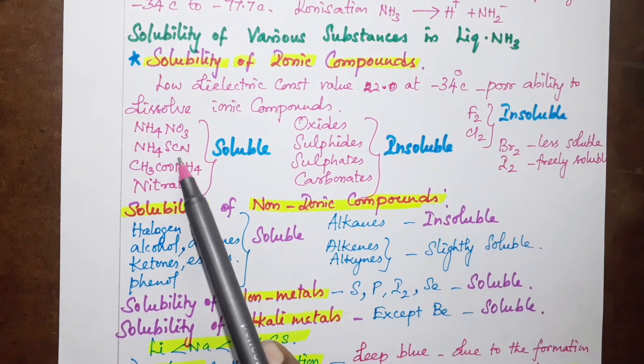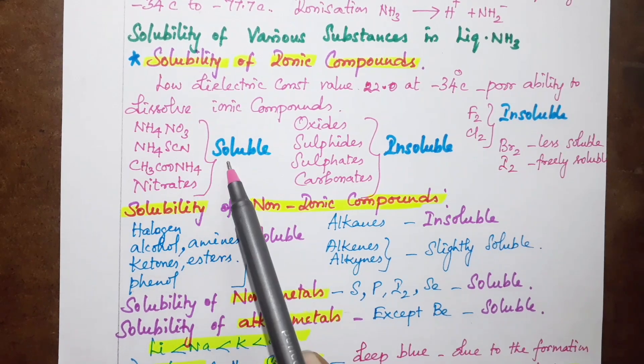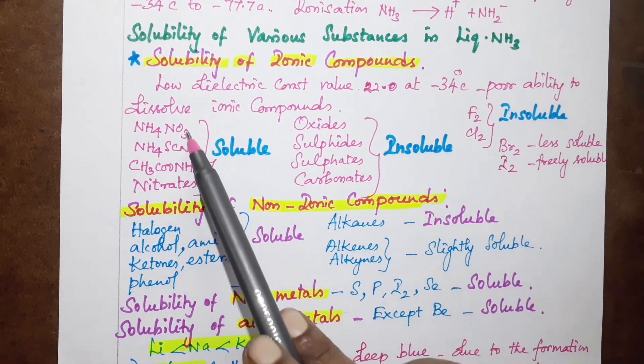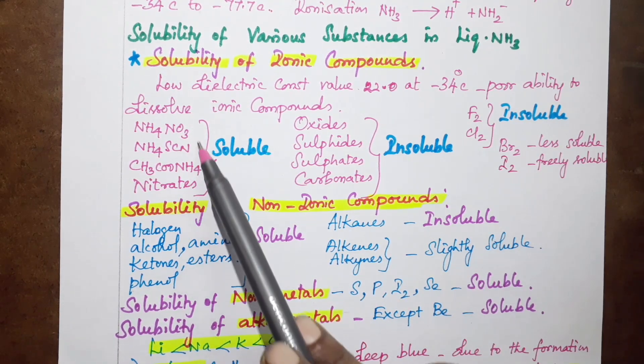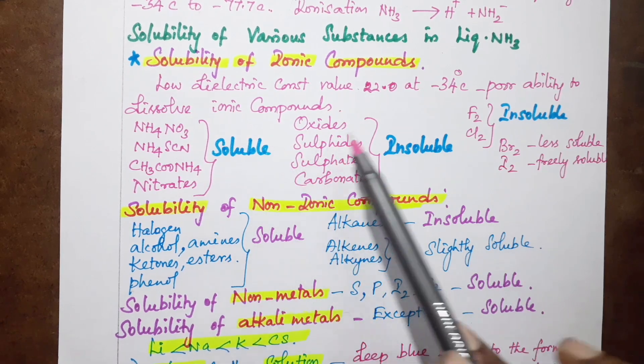Ammonium nitrates, ammonium thiocyanate, ammonium acetate - all are soluble. These are ionic compounds in this group that are easily soluble in liquid ammonia.